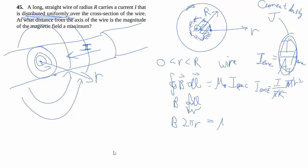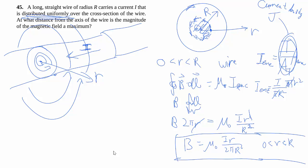Those guys go away, and you have a different expression for your current enclosed. So r cancels, and we end up with that expression there, which tells us, for zero to r, to big R, which means inside the wire, the magnitude of the magnetic field increases linearly.